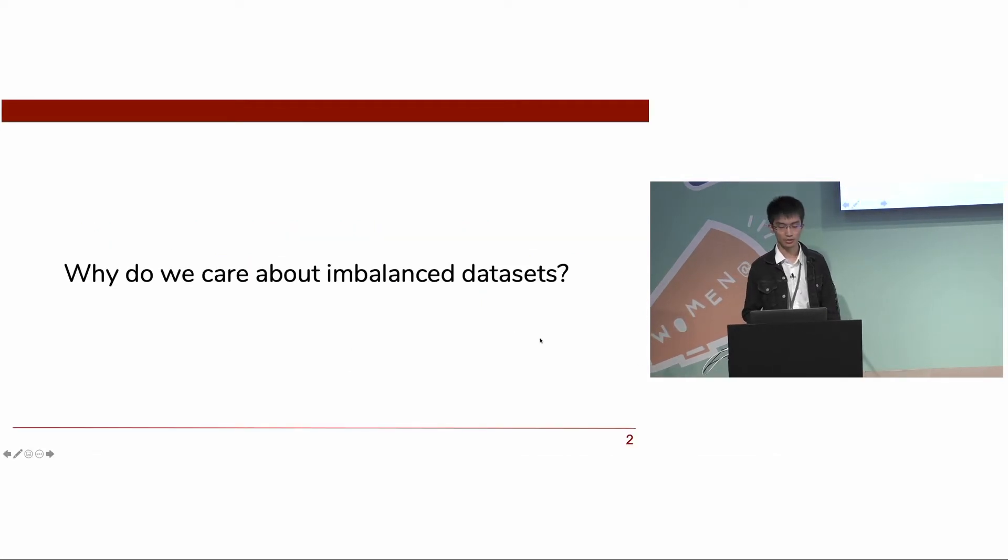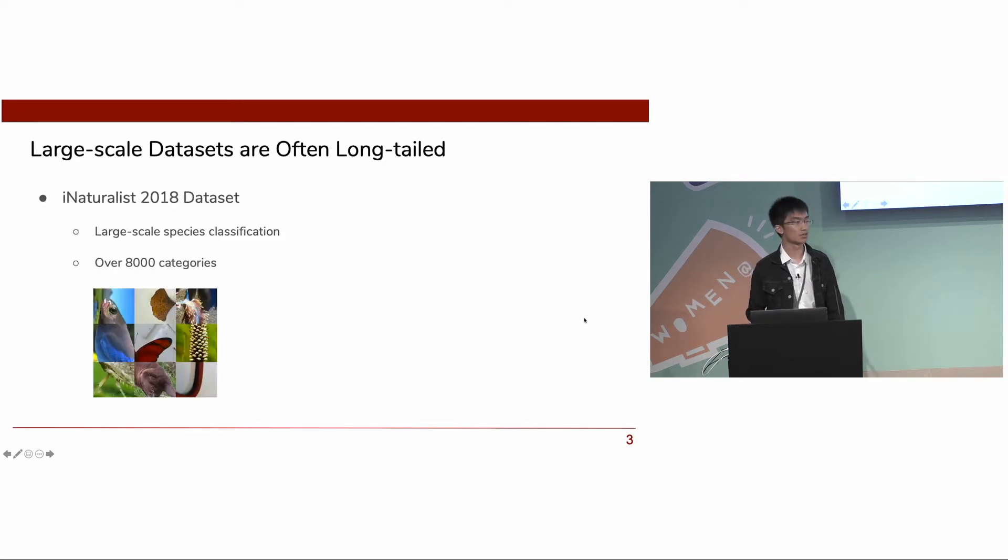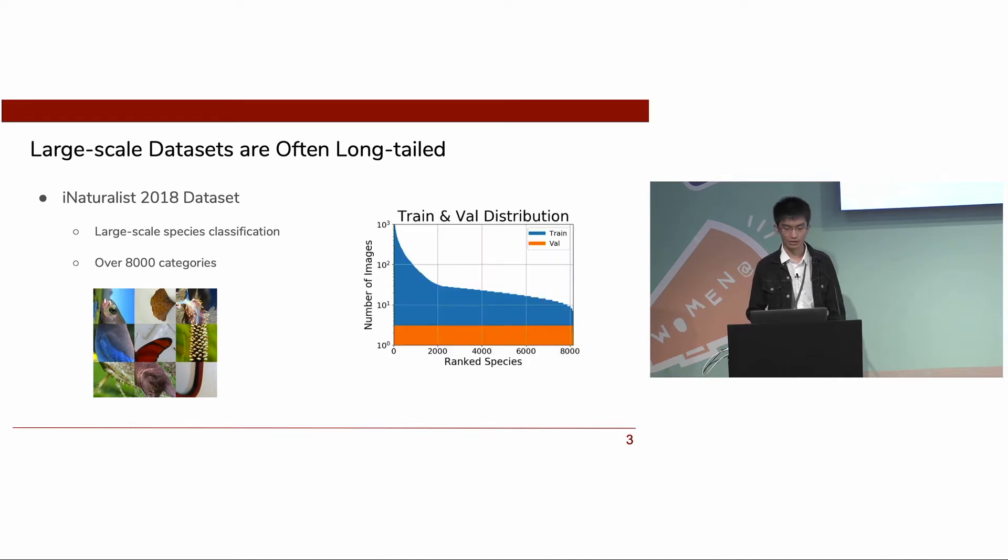So here comes our first question: Why do we care about imbalanced datasets? The first reason is that large-scale datasets are often long-tailed. Let's take iNaturalist dataset as an example. It's a large-scale species classification task with more than 8,000 categories, and most importantly, the training distribution is long-tailed.